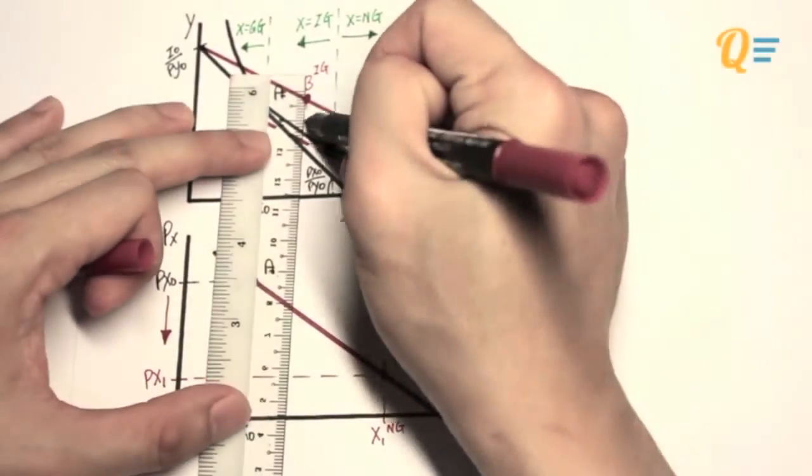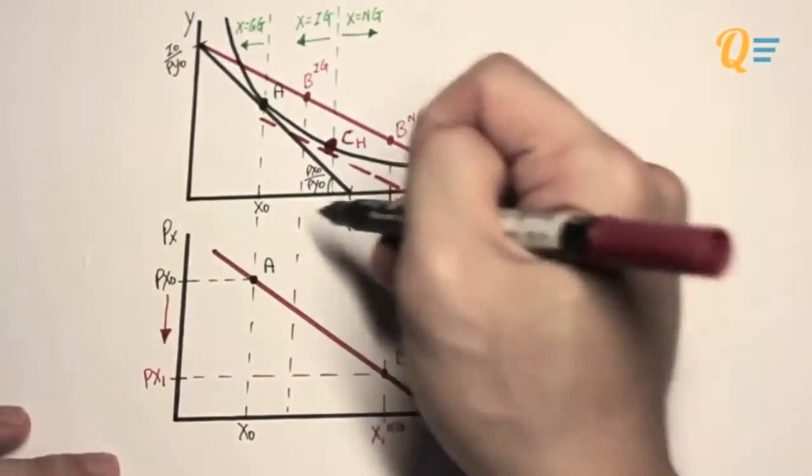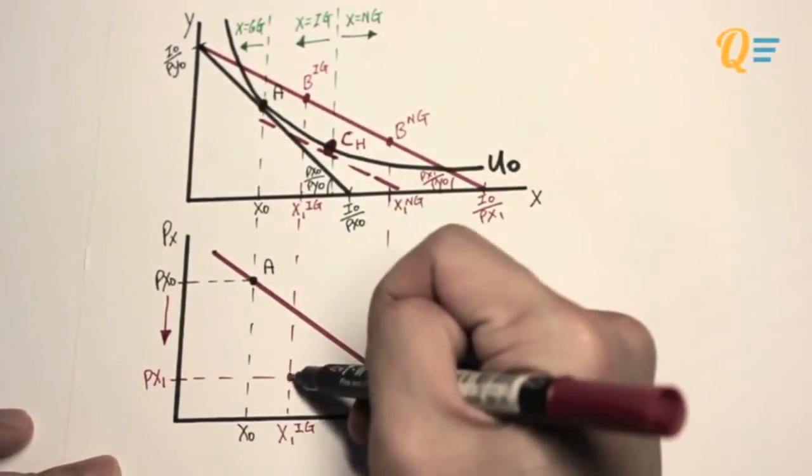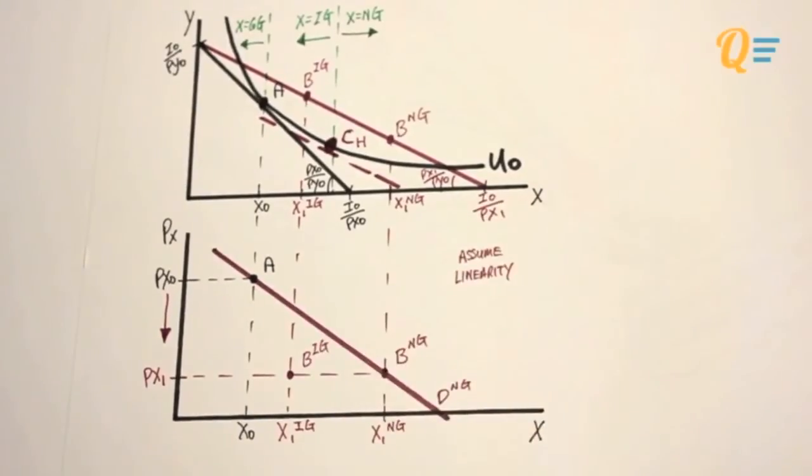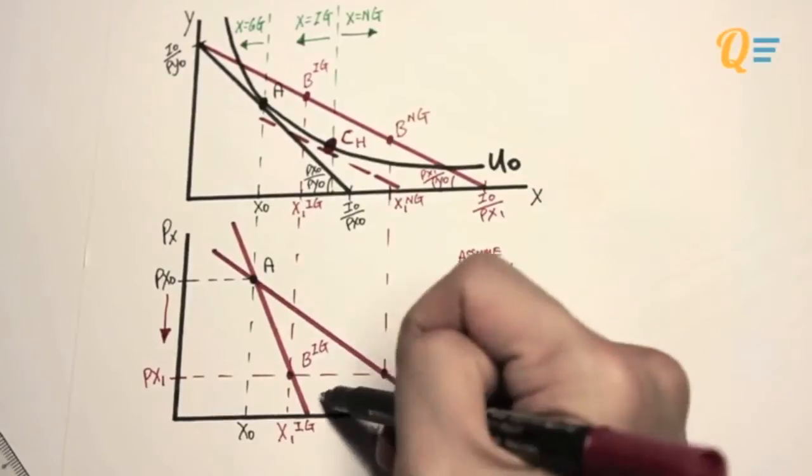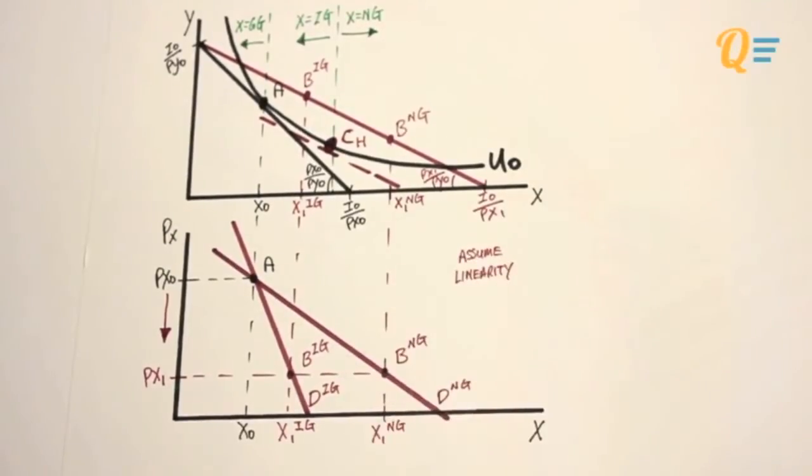The reason why I say assume linearity is because in real life, your demand curve is never a straight line. Sometimes it might be a curve. So I've got another point. I've got point B if, let's say, X is an inferior good. So same thing. I'm going to connect points A and B. And I've got a demand curve for an inferior good.